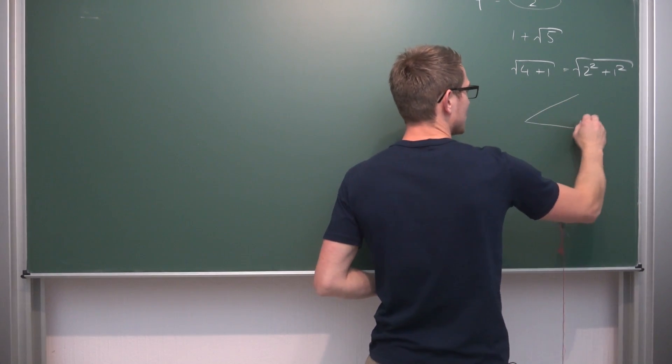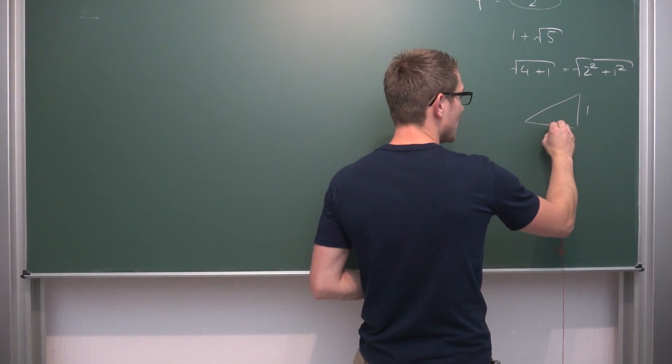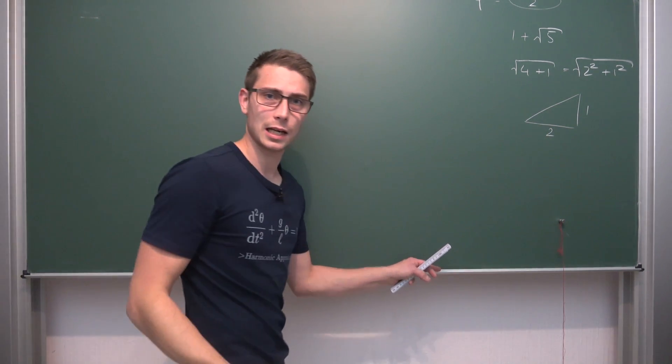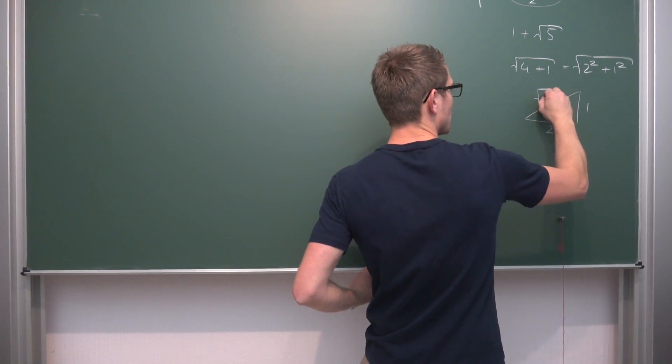So what you want to construct here is a unit side length. This is something we can definitely construct. Then we have double the unit side length. We can also double side length. This is not a problem. And as a consequence, we are going to get the square root of 5.